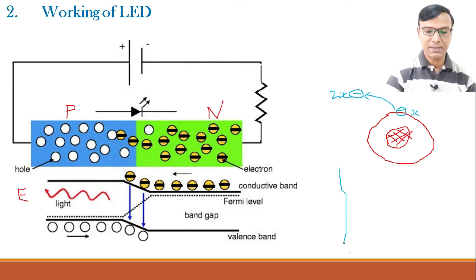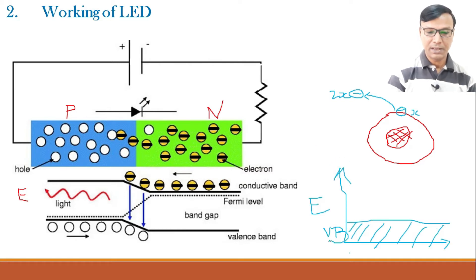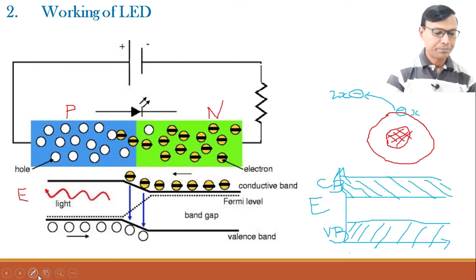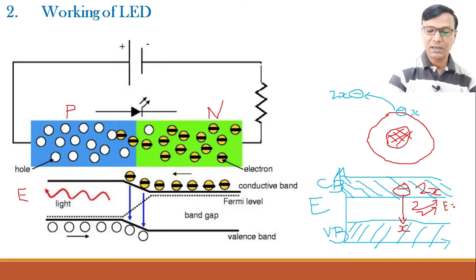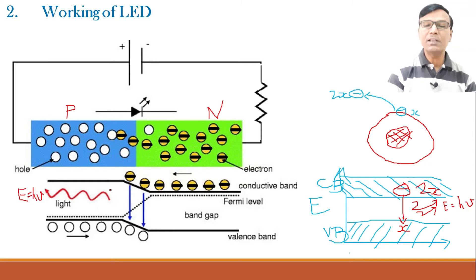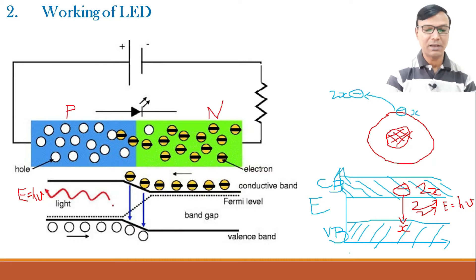In the energy band diagram, the electron in the conduction band has energy 2X. When this electron recombines with the hole present in the valence band, it falls back and again becomes an electron having energy X, and some energy equal to E = hν is released — the energy it had taken while going from the valence band to the conduction band. If you use specific materials such as gallium arsenide or gallium arsenide phosphide, this energy is emitted in the form of light. For a normal diode made of silicon or germanium, this energy is emitted as heat.